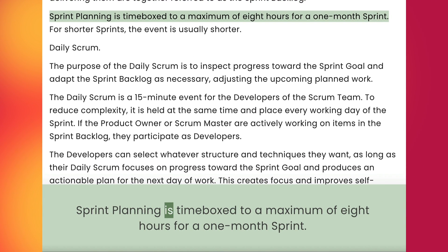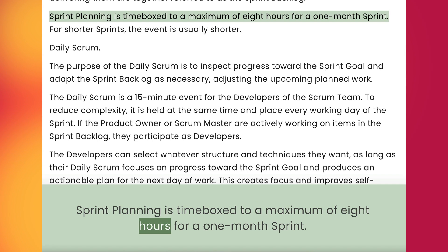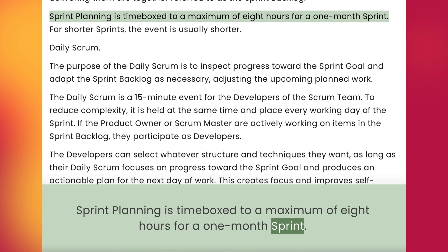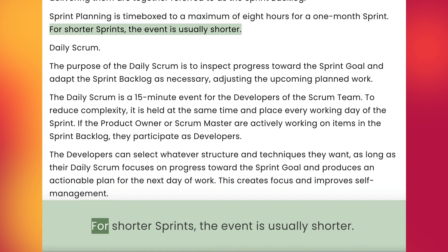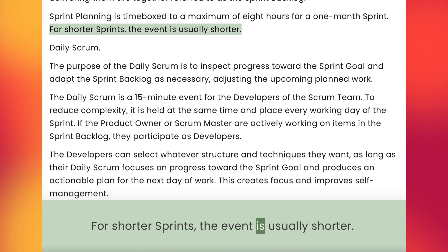Sprint planning is time-boxed to a maximum of 8 hours for a one-month sprint. For shorter sprints, the event is usually shorter.